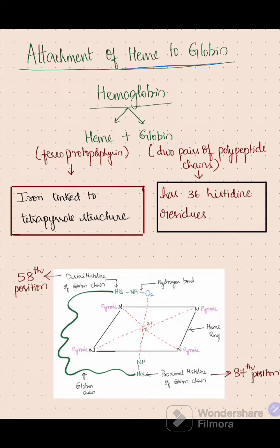Attachment of heme to globin. Hemoglobin is made of heme and globin. In the structure of heme, there is iron linked to a tetrapyrrole structure.